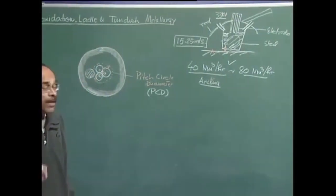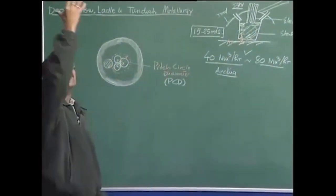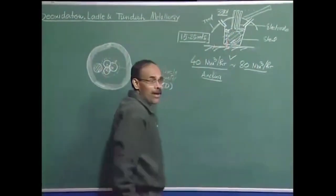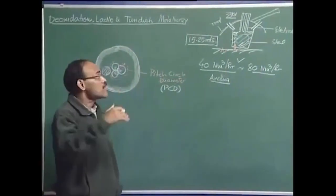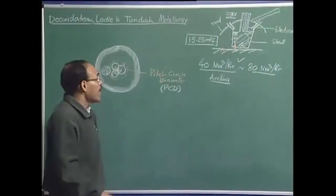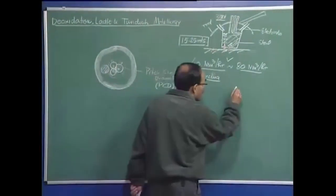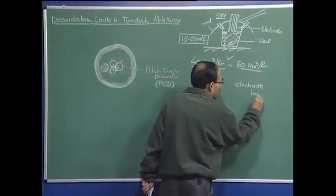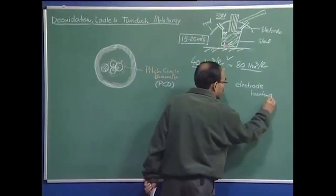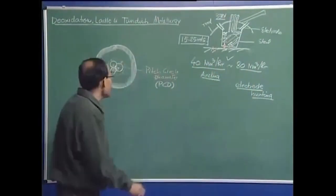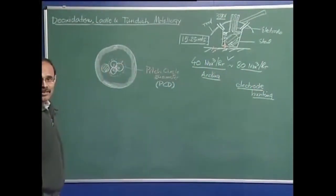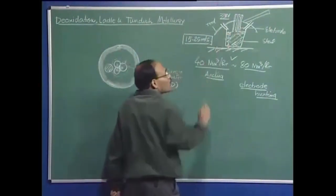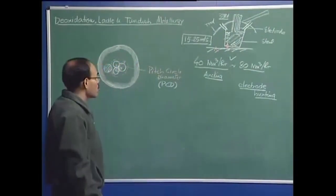Why is this so important? In the plume region there is high velocity, and this bath contains no carbon while the electrodes are made of graphite. So the graphite will tend to dissolve very fast — this phenomenon is known in the ladle furnace industry as electrode hunting. Electrodes get hunted. By displacing the porous plug toward the wall, we minimize the hunting or dissolution of the graphite electrodes into the melt.